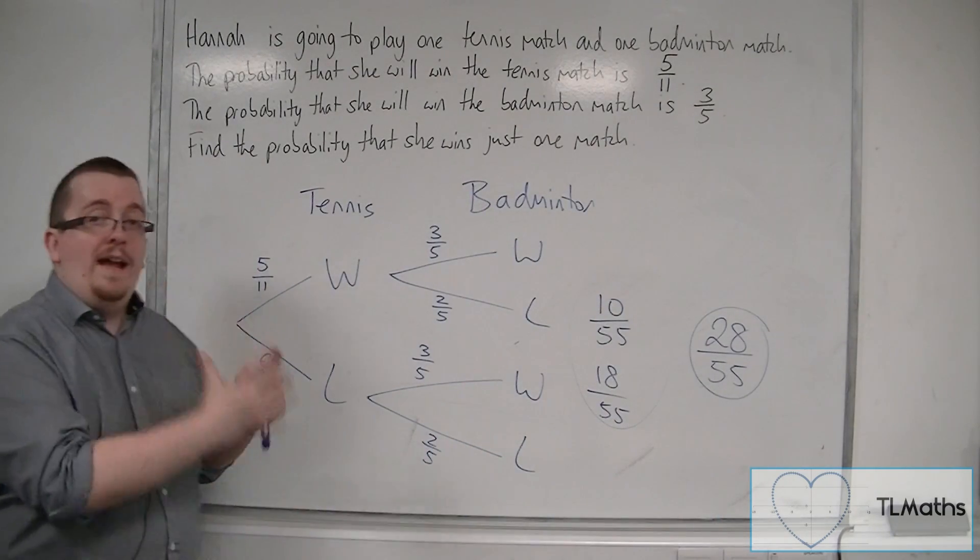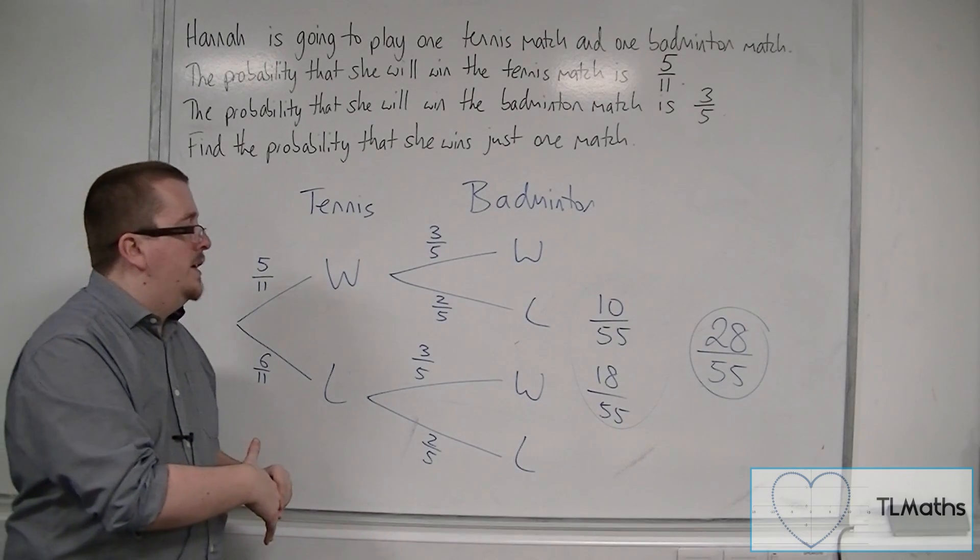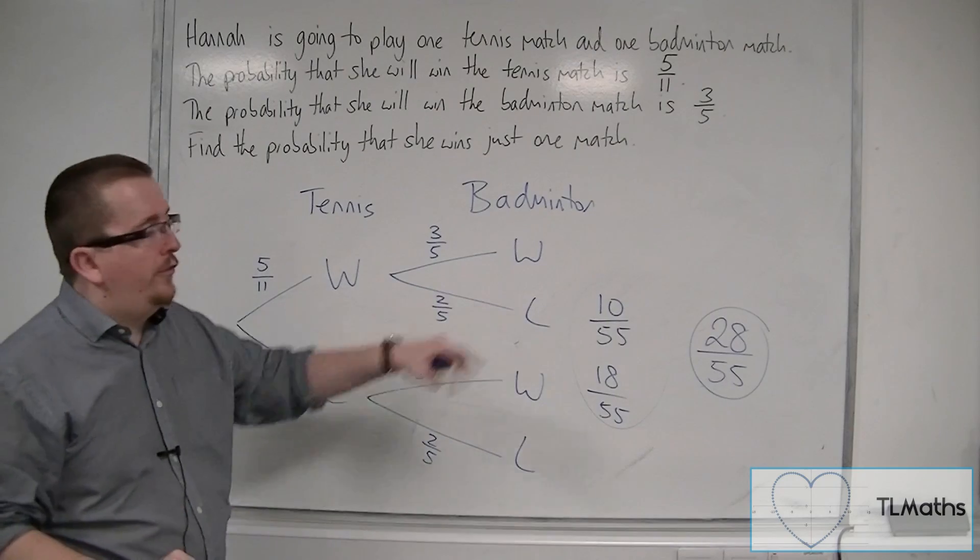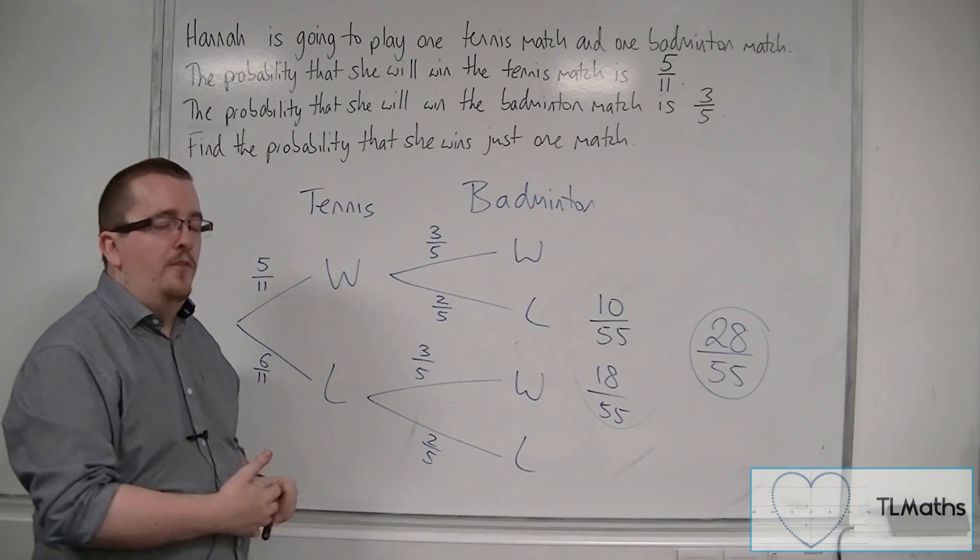This is a basic example of how tree diagrams work, and how you can multiply along the branches and add the scores at the end in order to find the final probability.